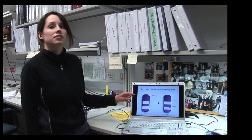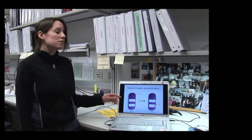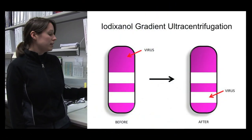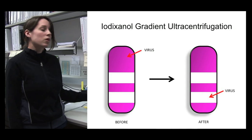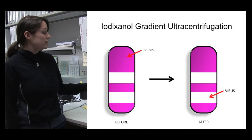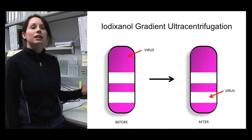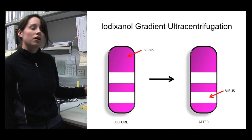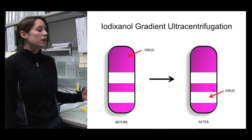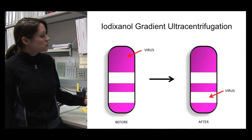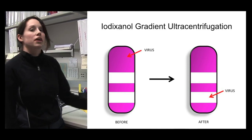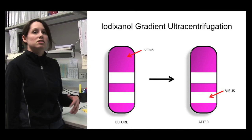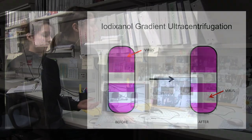After we've made our virus, we first lyse our mammalian cells and add the contents to an iodixanol gradient. The iodixanol gradient has a gradient of increasing density. We add the total cellular contents to the top of the gradient and then spin it in an ultracentrifuge. This allows us to separate out our virus particles from all the other contents of the cell. Once spun down, we know which layer our virus will be in, allowing us to isolate purified virus.